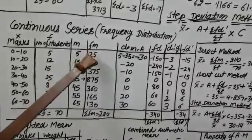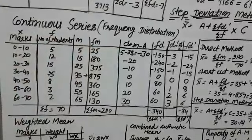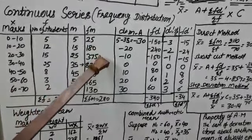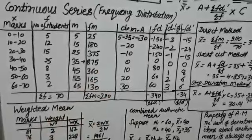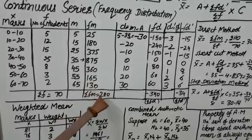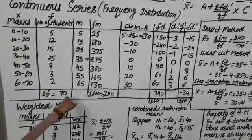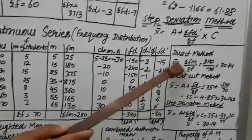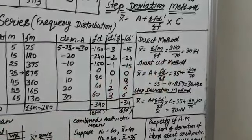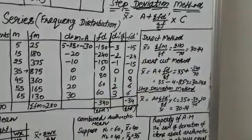By direct method, we will multiply frequency by m (mid-value). fm values are worked out as 25, 180, 375, 875, 360, 165, and 130. Sigma fm is equal to 2110, whereas sigma f — number of students — is 70. So by direct method, the formula is mean = sigma fm / sigma f = 2110 / 70, that is 30.14 marks.